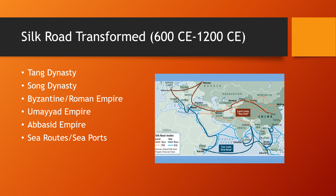Sea routes and ports were established, making trade easier. Common goods are shipped, and no longer is the Silk Road primarily on land — it is found to be easier to travel through the sea.